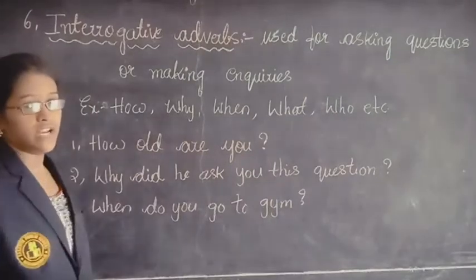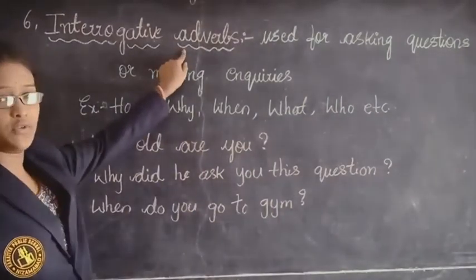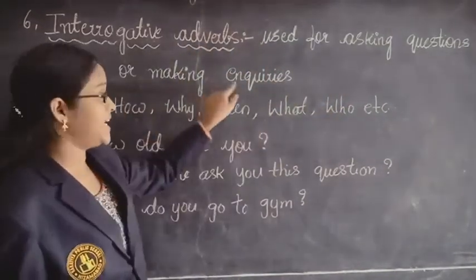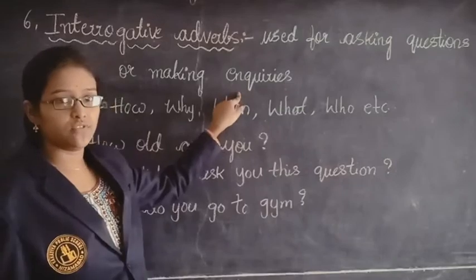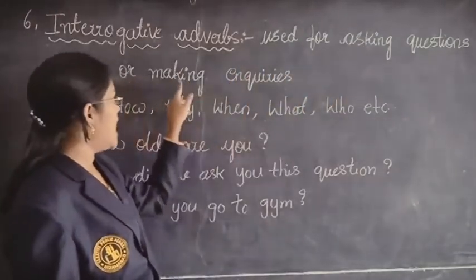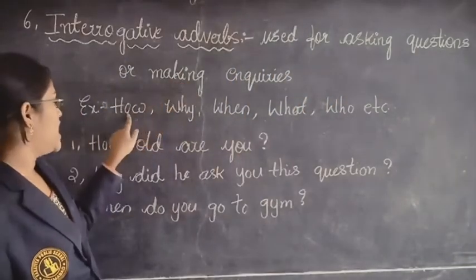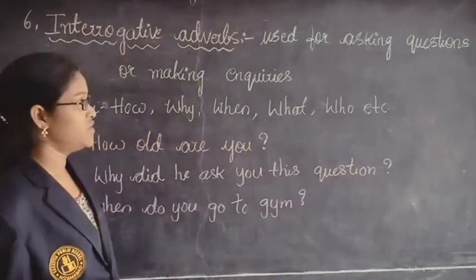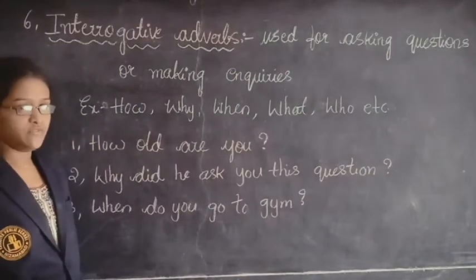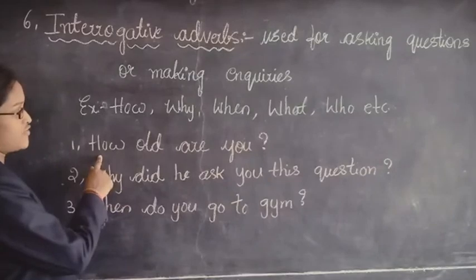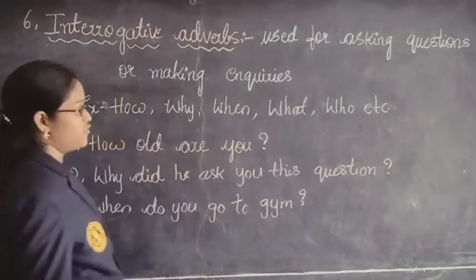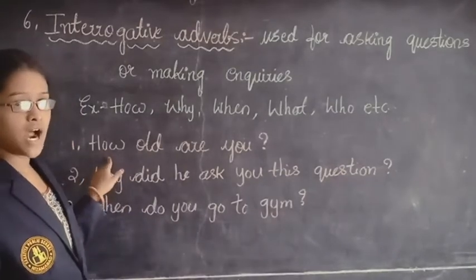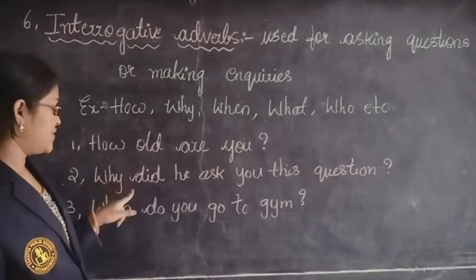Next we are going to learn about interrogative adverbs. What are interrogative adverbs? They are used for asking questions or making inquiries. Examples: how, why, when, what, who, etc. These are the words which come under interrogative adverbs. The first sentence is: How old are you? It is asking a question, so how is the interrogative adverb here.